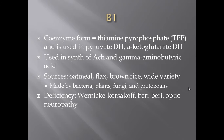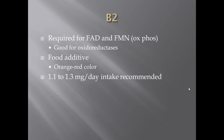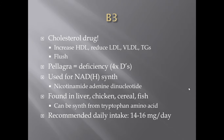Now let's move on to riboflavin, B2. B2 is required for FAD and FMN, which are used in oxidative phosphorylation. They're also good for oxidoreductases, and riboflavin is used as a food additive. The main point is that first one — required for FAD and FMN.